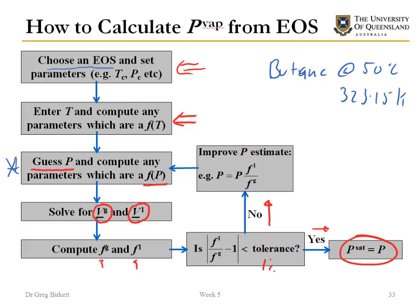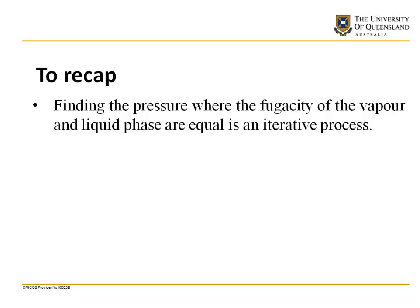Okay so if we go back just to reiterate the main point, to calculate the vapor pressure it's an iterative process. So you need to use the calculations for calculating fugacity coefficient and then fugacity, and then once you've got that you can calculate to see whether the gas phase and the liquid phase have the same fugacity. So to recap, finding the pressure where the fugacity of the vapor and the liquid phase are equal is an iterative process. Thanks for your time.